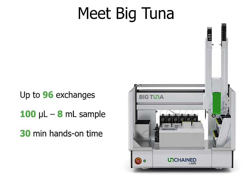Big Tuna can exchange or concentrate up to 96 samples in one single run, can handle sample volumes as low as 100 microliters to 8 mL. It is designed to be super simple to use — all you need is 30 minutes of prep time from designing the experiment to preparing the deck. Big Tuna will take care of all the exchange automatically, so you can walk away and come back to a finished sample.